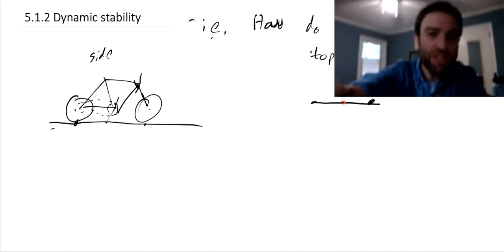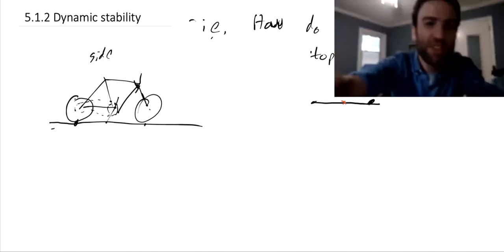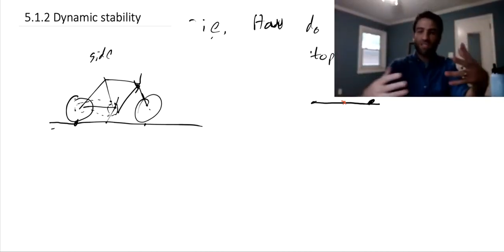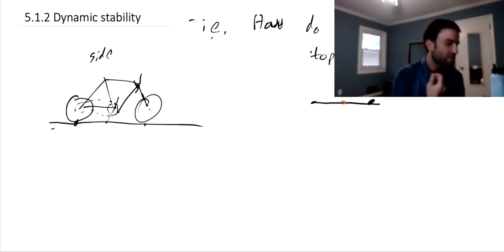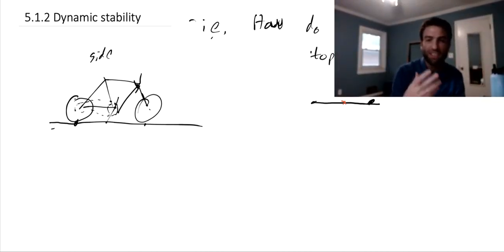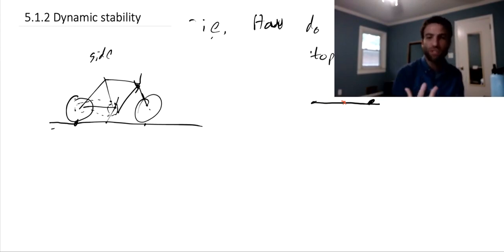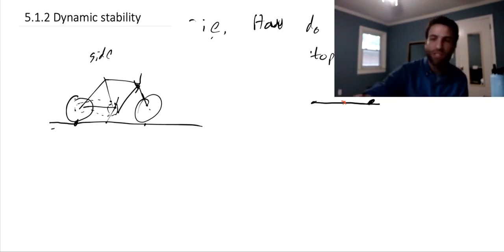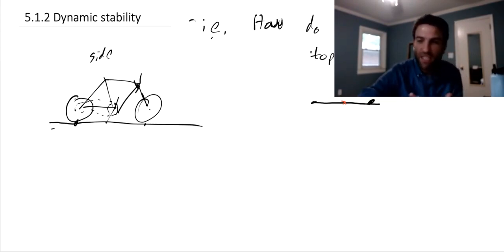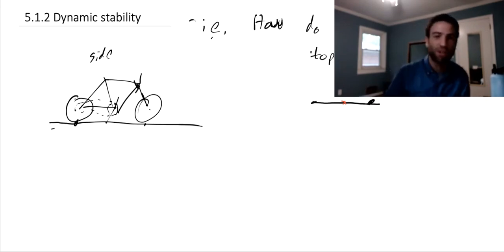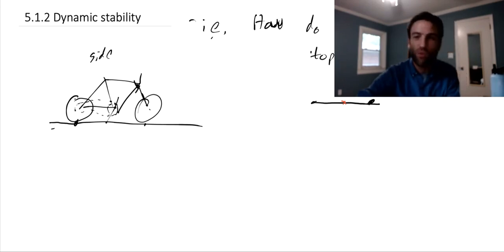The coin, when balanced on the edge, is very statically unstable - it's ready to fall over in response to the slightest perturbation. And yet a rolling coin will happily balance on its edge as long as it keeps up some particular speed. So what physical principles govern this kind of dynamic stability? Both the coin and the bicycle are not statically stable, but somehow when they're in motion, something seems to help stabilize and keep them upright.